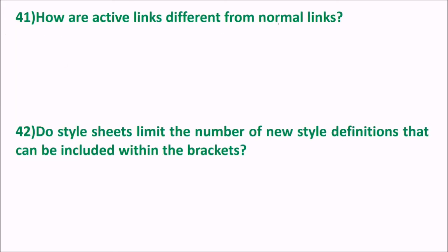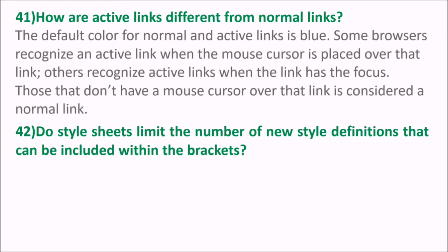How are active links different from normal links? The default color for both normal and active links is blue. Some browsers recognize an active link when the mouse cursor is placed over the link, while others recognize an active link when the link has focus. Links that don't have a mouse cursor over them are considered normal links.